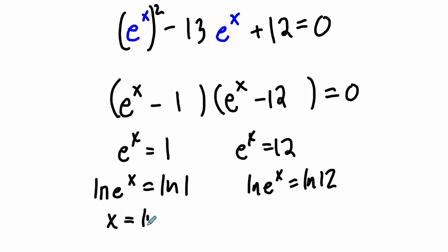And one answer is x could be the natural log of 1, which is just 0. e to the 0 power is 1. That's what this is saying.